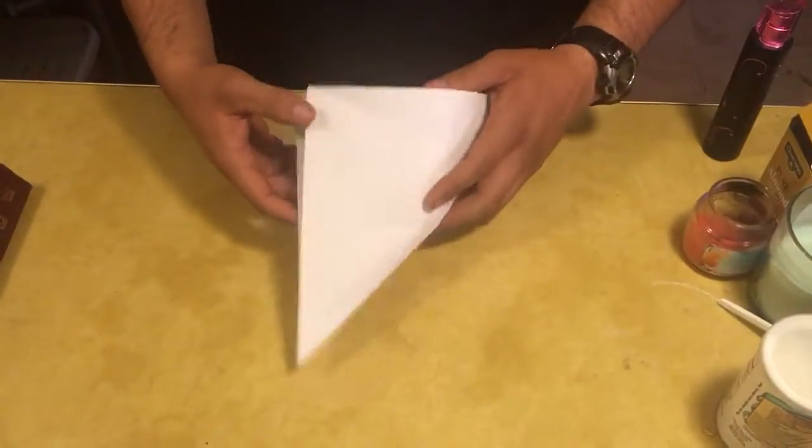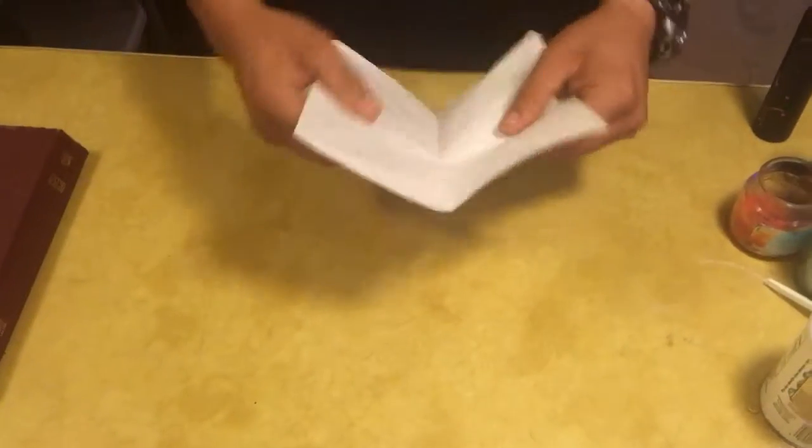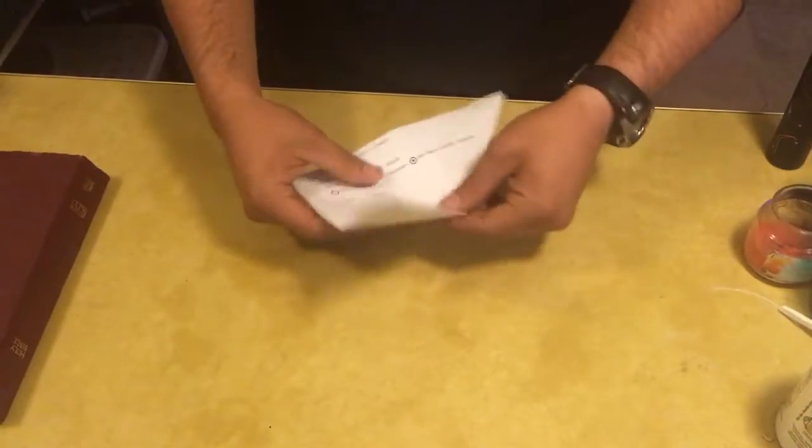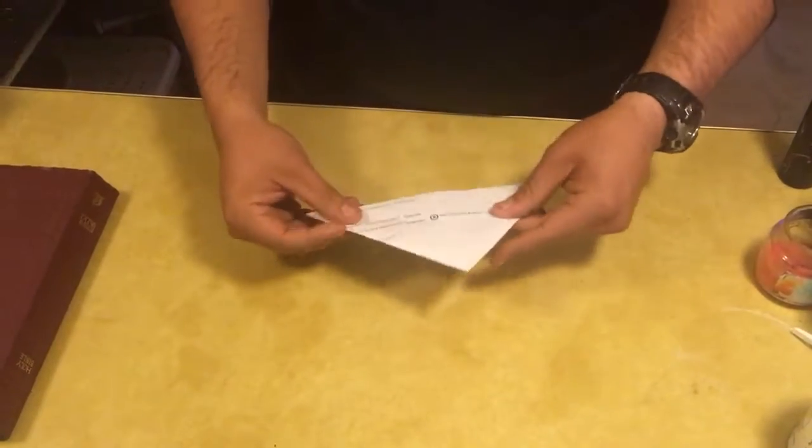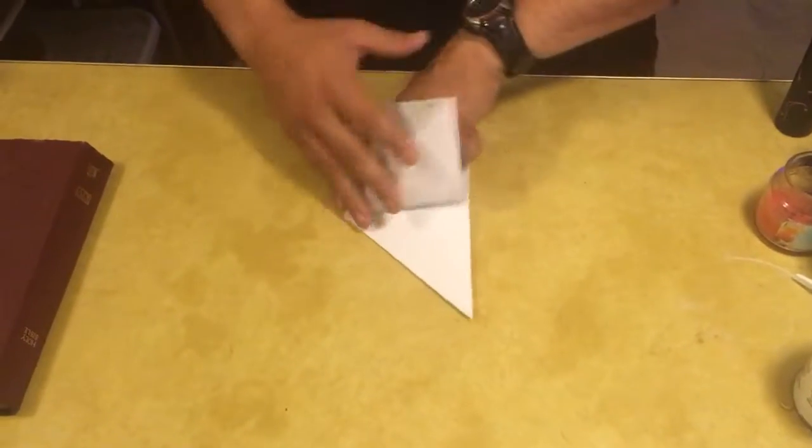I already did some folds so that way it's easy. Kind of go like this. Kind of figure it out. Oh man, what am I doing? Fold it in half and then you fold it in half again, alright? And you open up this right here. Do that. There you go.